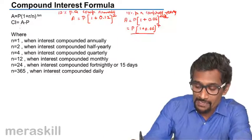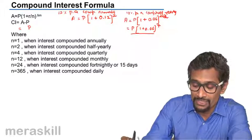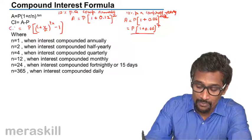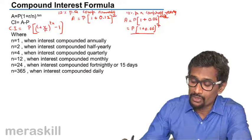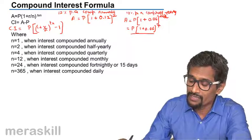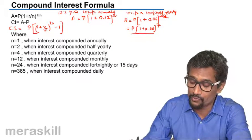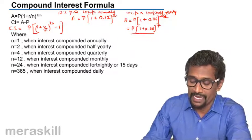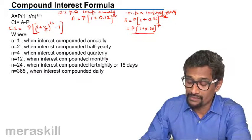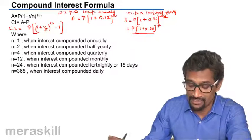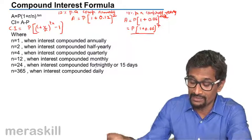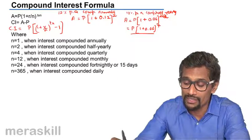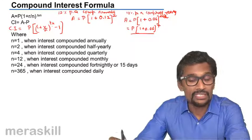Compound interest equals Amount minus Principal, which gives P × [(1 + R/N)^(T×N) − 1]. Here: N = 1 when compounded annually, N = 2 when compounded half-yearly, N = 4 when compounded quarterly, N = 12 when compounded monthly, N = 24 when compounded fortnightly (once every 15 days), and N = 365 when compounded daily. For daily compounding, the rate is also divided by 365, so a 10% rate becomes 0.10 ÷ 365, raised to the power of 365.